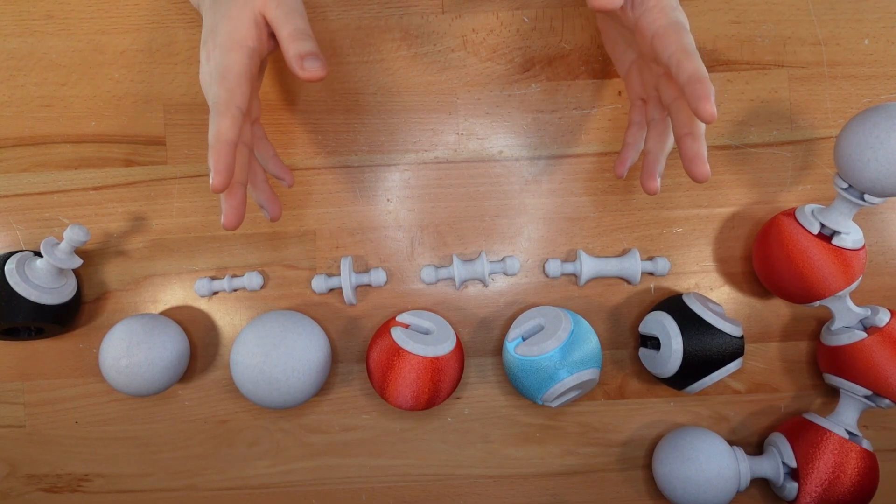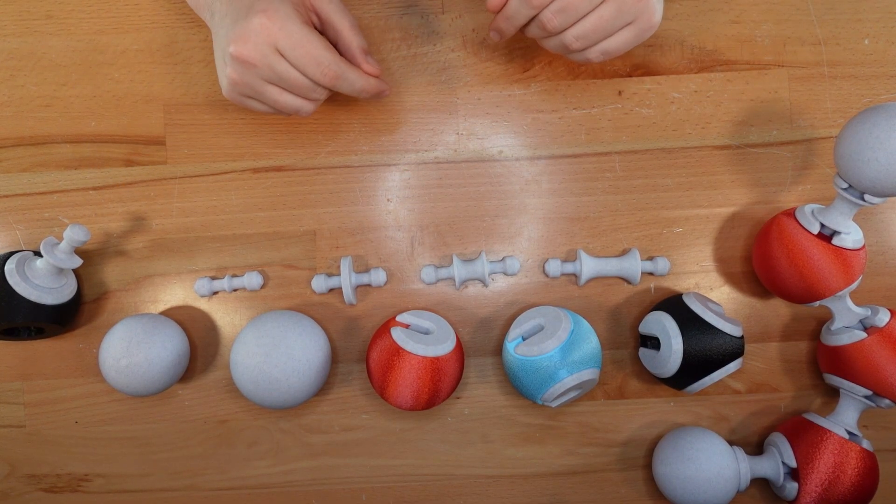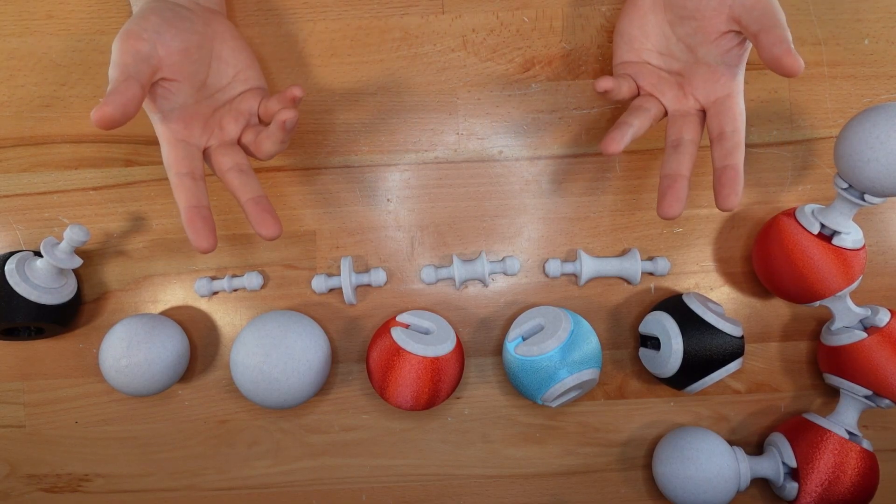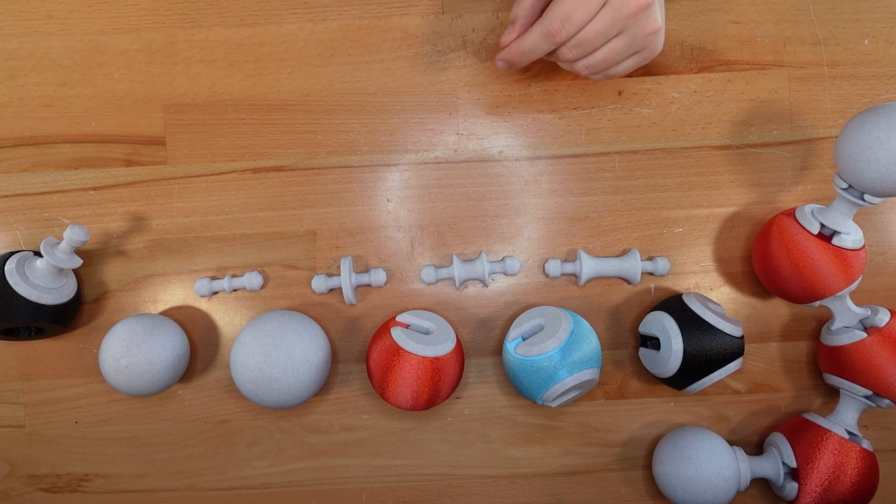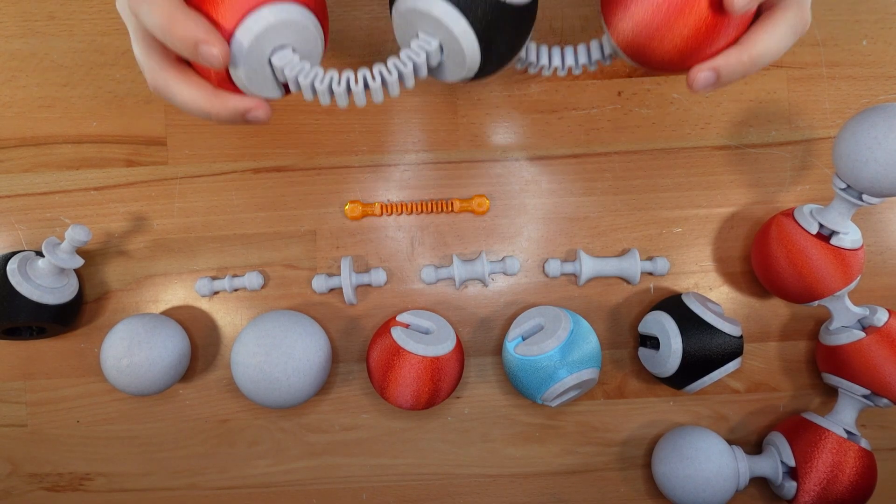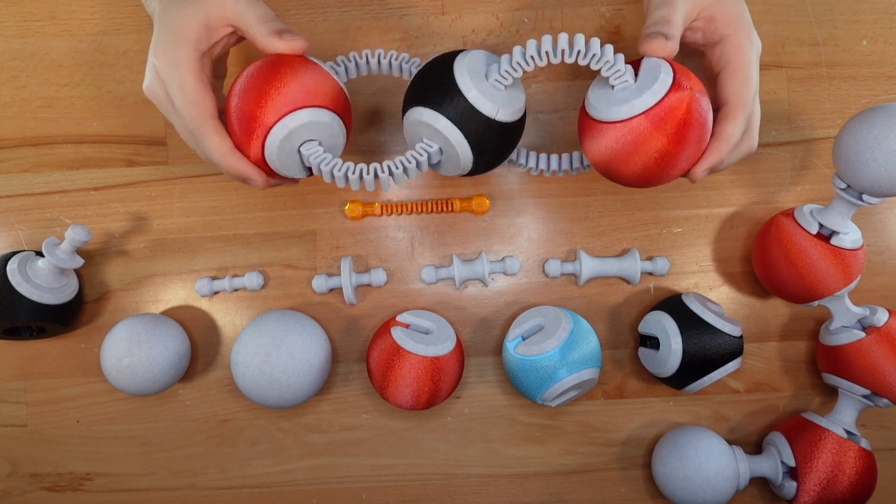But what if you're building a molecule that uses double or triple covalent bonds, like carbon dioxide? For that, you'll need to use something a little more flexible, like this springy bond, which I printed in TPU. These connect the same way as the other bonds.